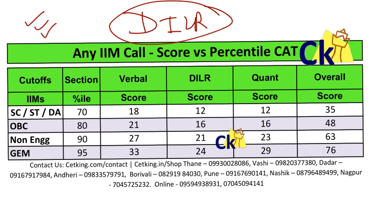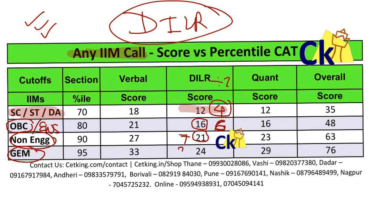Let's look at the cutoffs for the DLR section — you'll be surprised how low they are. For SC/ST category, to get any IIM call you need only 12 questions correct, which is 12 marks. Divide by 3 marks per question — that's just 4 questions correct. For OBC and EWS category, that's 16 marks — roughly 5 to 6 questions correct. For non-engineers, 7 questions correct (21 marks), and for general category, just 8 questions correct. That means doing only two sets correctly is enough to get the IIM call.